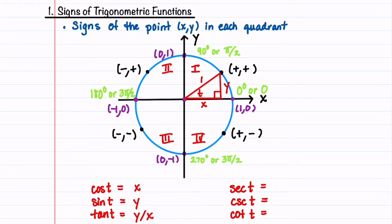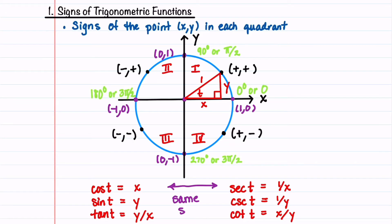Or you can think of tangent as opposite over adjacent. Secant t is 1 over cosine t, so that's 1 over x. Cosecant t is 1 over sine t, so that's 1 over y. And then lastly, cotangent t is 1 over tangent t, so that becomes x divided by y. Notice that the signs of the co-functions are going to be the same as their corresponding functions.